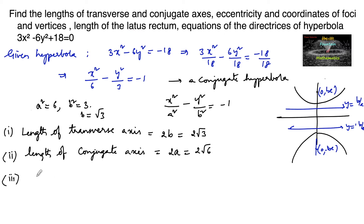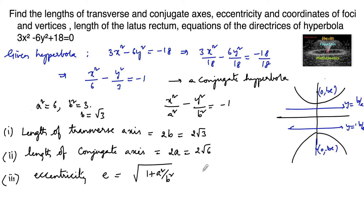Third, eccentricity: for a conjugate hyperbola, e equals √(1 + a²/b²), which equals √(1 + 6/3) equals √(1 + 2) equals √3. So eccentricity is √3.